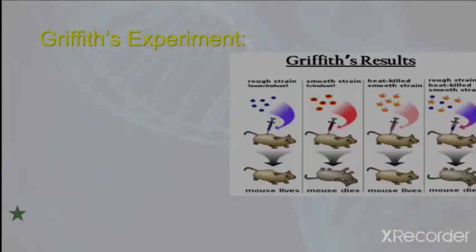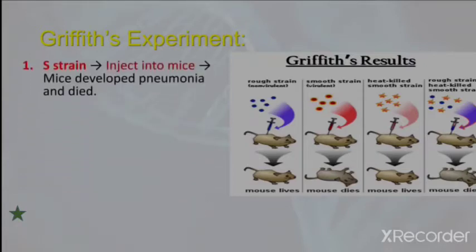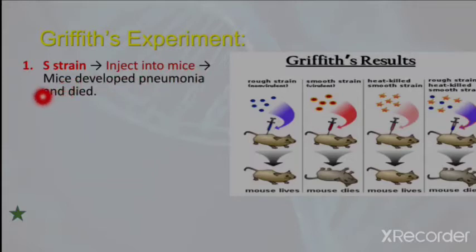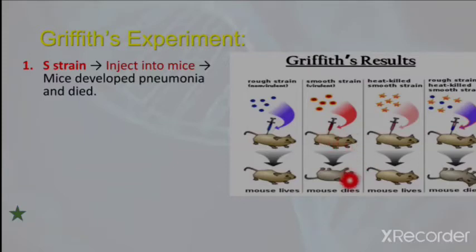Let us see Griffith's experiment. First, Griffith took the S strain of the bacteria and injected it into mice. The result was that the mice developed pneumonia and died. As you can see in the picture, when the S strain was injected, the mice developed pneumonia and died. This was the first step of the experiment.